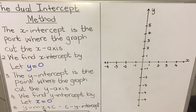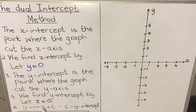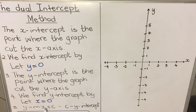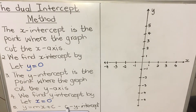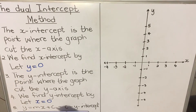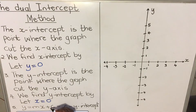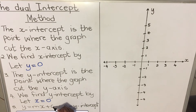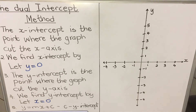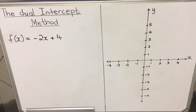Straight lines — linear functions — have the formula y equals mx plus c. Always, the c is the y-intercept. That number that stands alone without an x, that is the y-intercept. Let's look at an example.